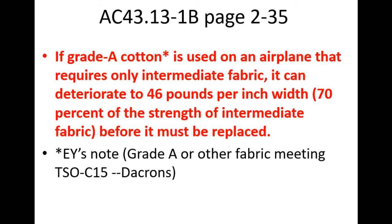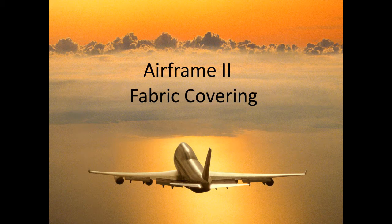If Grade A cotton is used on an aircraft that requires only intermediate fabric — VNE speed less than 160, wing loading less than 9 pounds per square foot — we can use intermediate or upgrade to Grade A. If we choose to upgrade to Grade A when it's not required, that Grade A can deteriorate to 46 pounds per inch, the minimum strength for intermediate, which was what was approved for that aircraft.